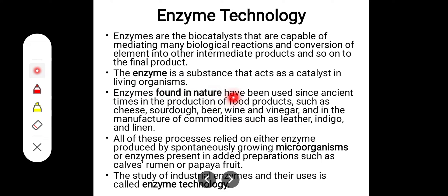Enzymes found in nature have been used since ancient times. Outside of living organisms, enzymes have been used for different purposes — for example, preparation of cheese, curd, paneer, and in the production of food products such as cheese, soda, beer, wine, and vinegar, and in the manufacture of commodities like leather, indigo, and linen. All these processes relied on either enzymes produced by spontaneously growing microorganisms or enzymes present in added preparations such as calves' rumen or papaya fruit. The study of industrial enzymes and their use is called enzyme technology.